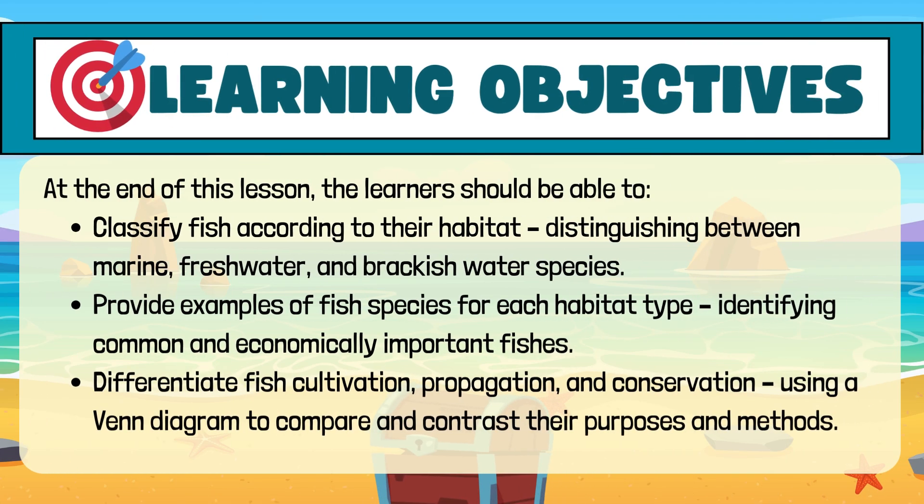Learning objectives: At the end of this lesson, the learners should be able to classify fish according to their habitat, distinguishing between marine, freshwater, and brackish water species. They should also provide examples of fish species for each habitat type, identifying common and economically important fishes.